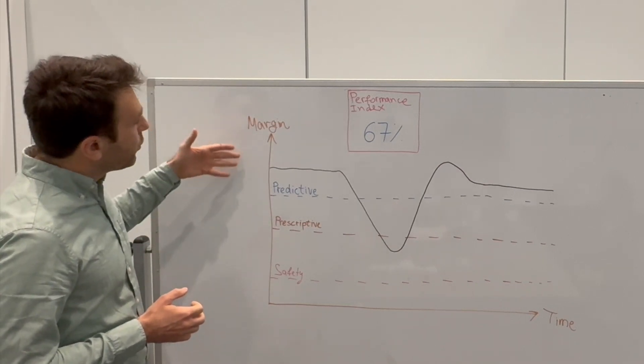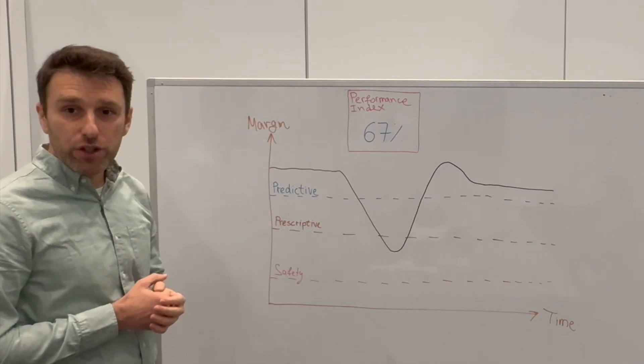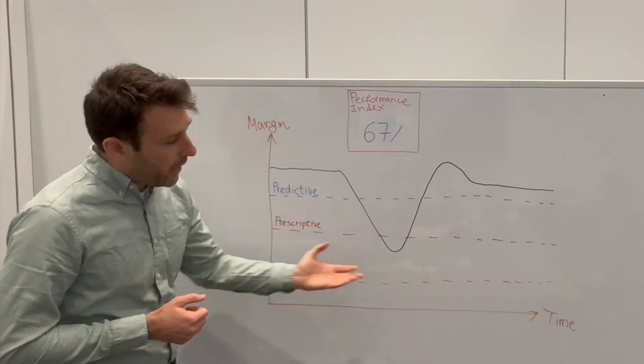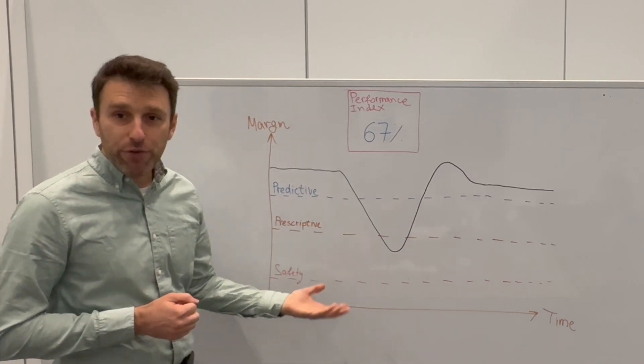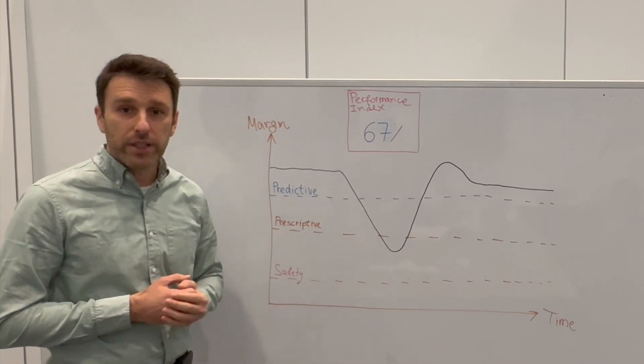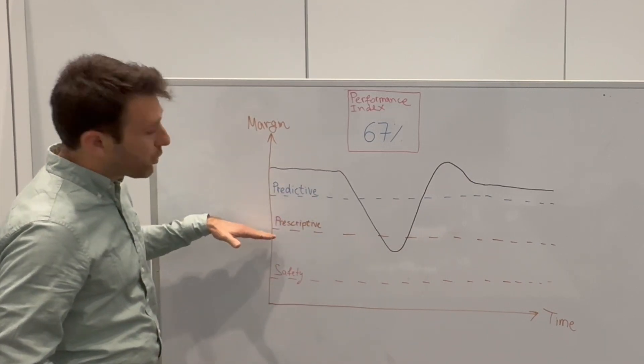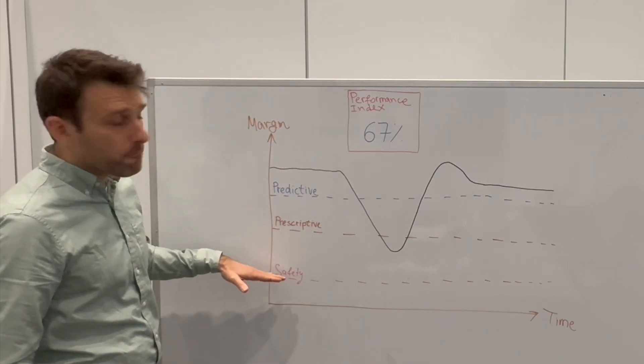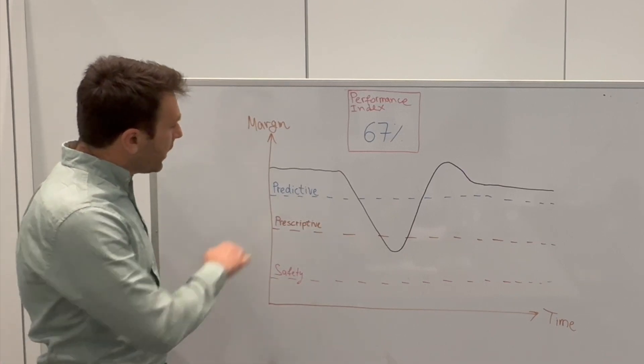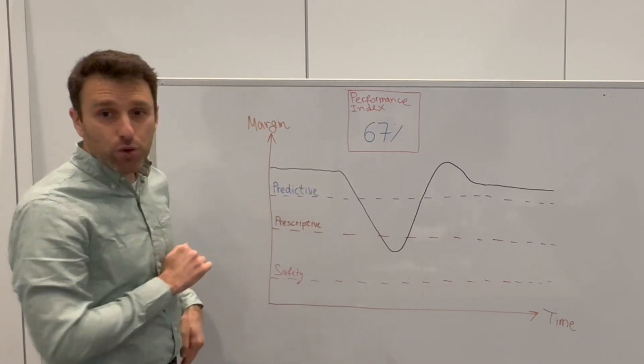We see a monitoring of timing margin within the chip over time as the chip is operating under functional workloads in the car. We have different threshold lines: predictive line, prescriptive line, and safety line threshold. And the black line here represents the actual margin.